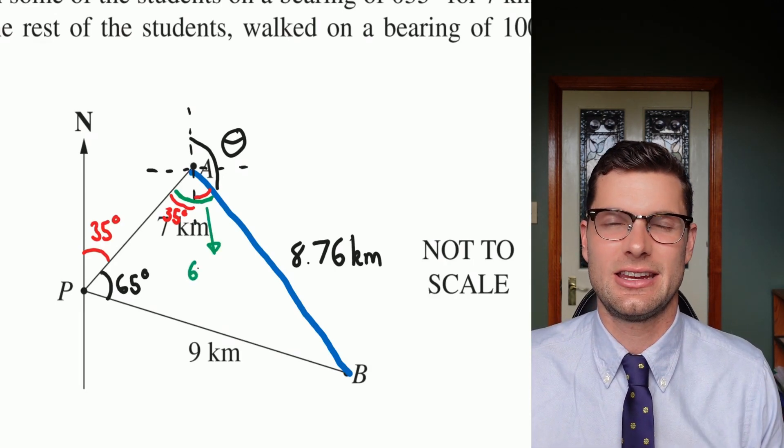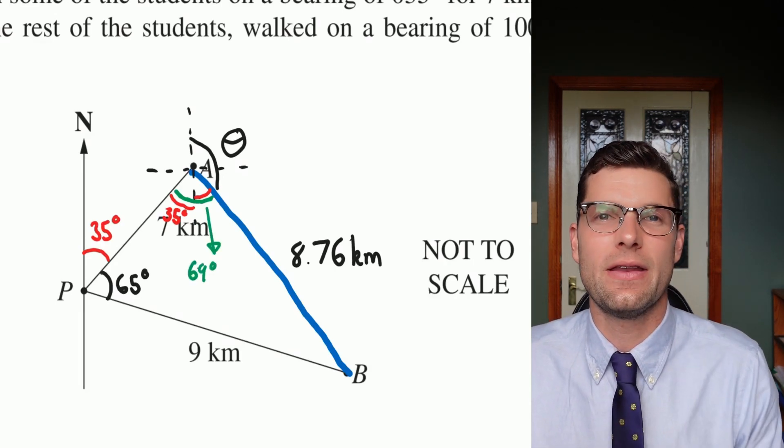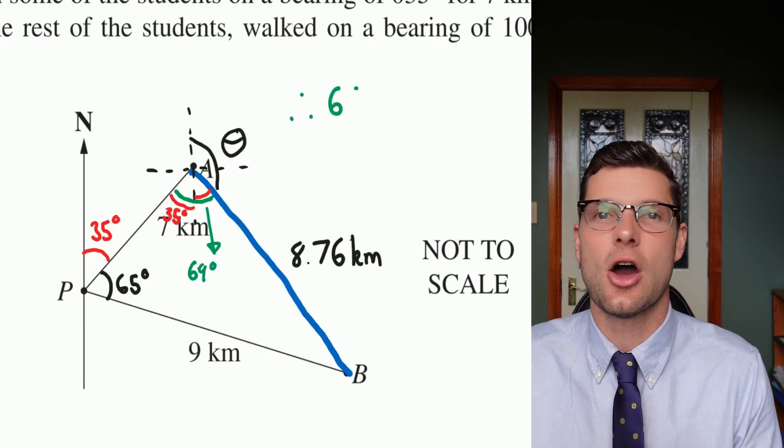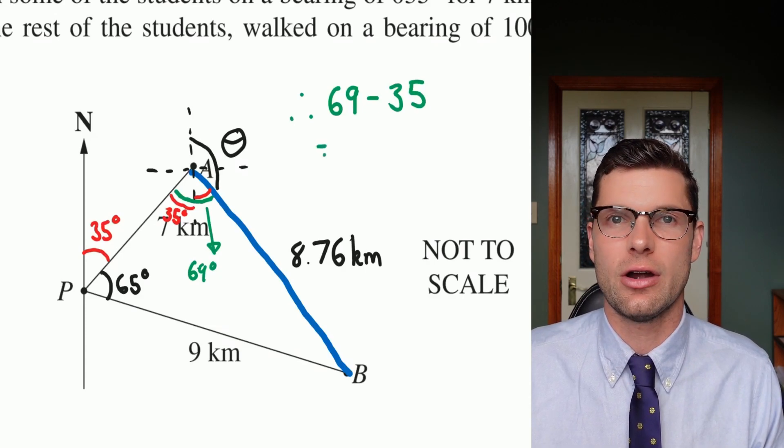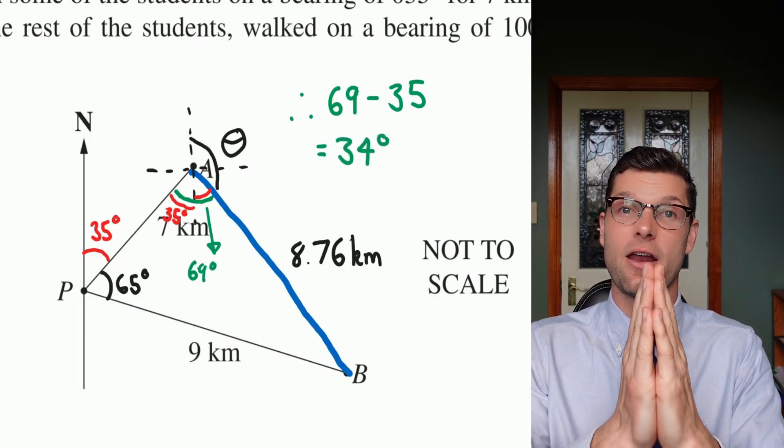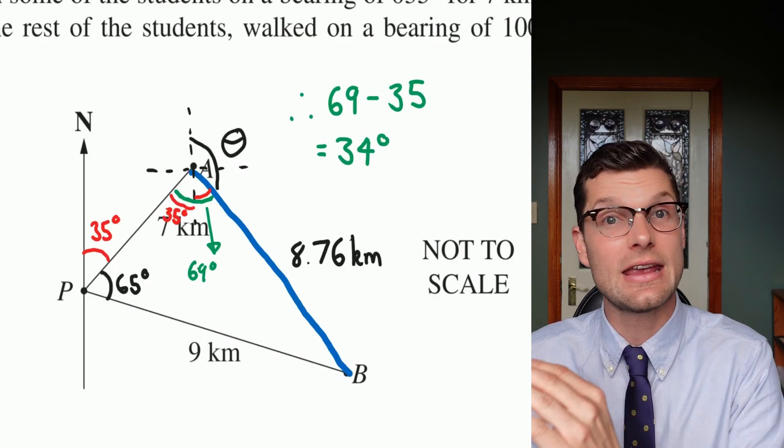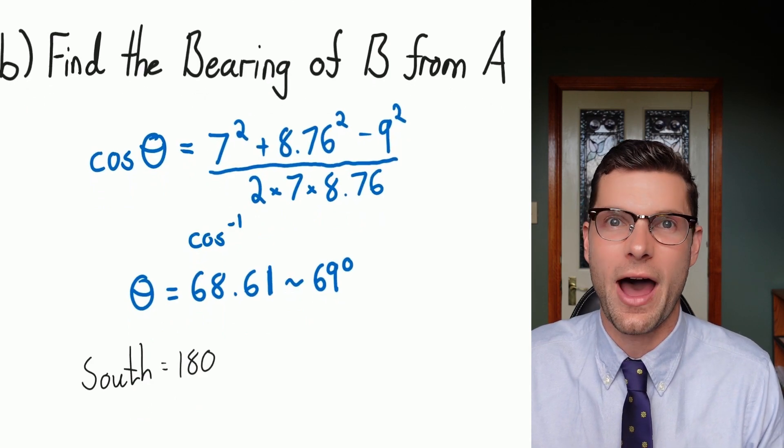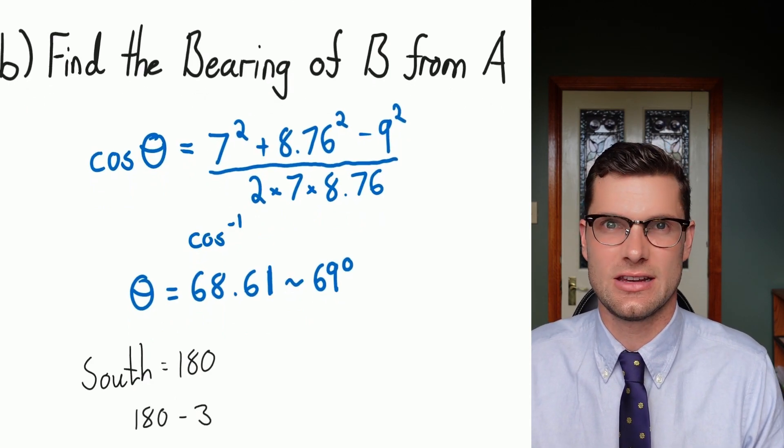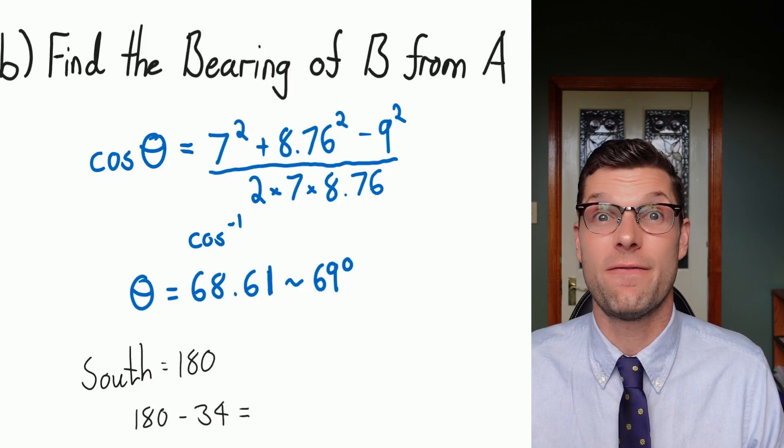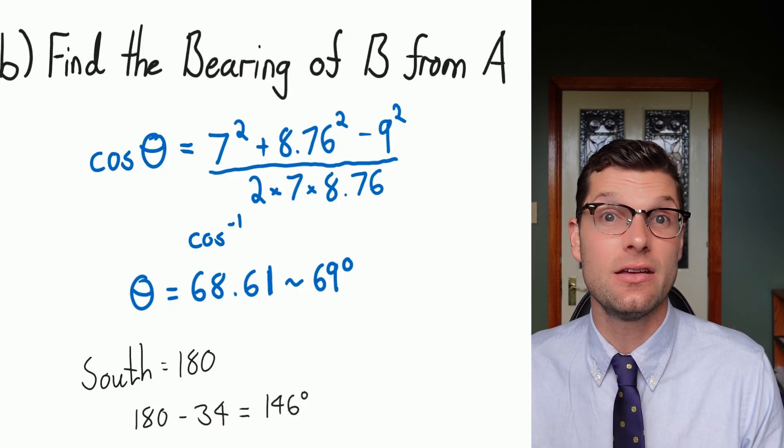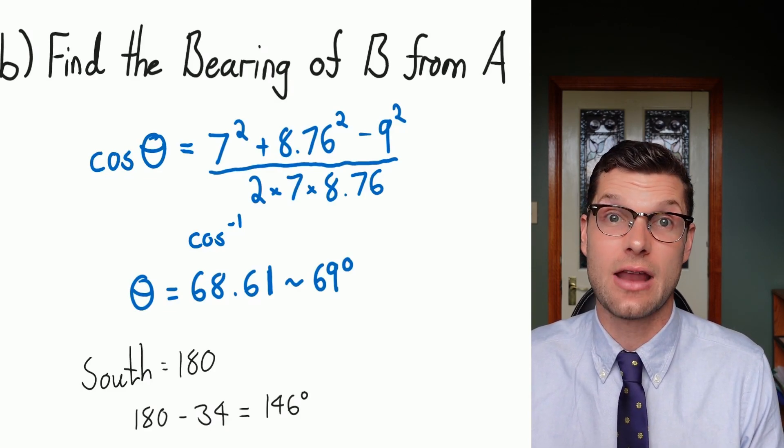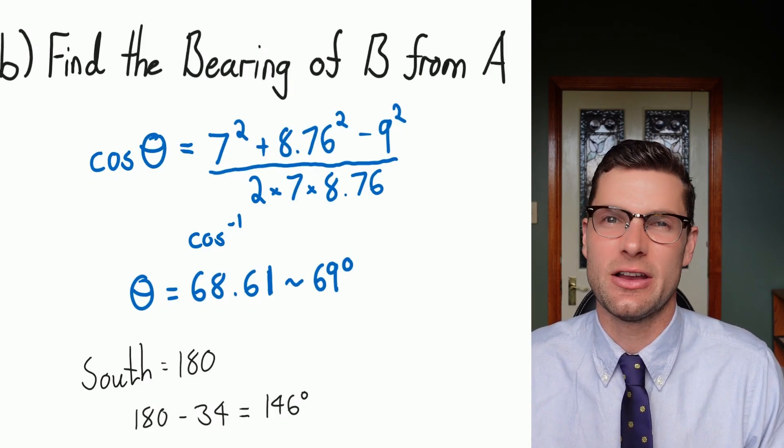So now because I know that whole angle is 69 degrees, and that little bit there is made up of 35 degrees, what's left over is obviously 69 minus 35, which equals 34 degrees. So because south is 180, and I've just gone 34 degrees in that direction, in the southeast direction, I just have to minus 34 from 180, which gives me the answer of 146 degrees. And that is actually my final answer. So what this is saying is that point B from point A is 8.76 kilometers away at an angle of 146 degrees, or that is my direction.